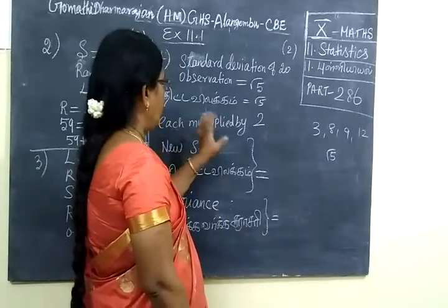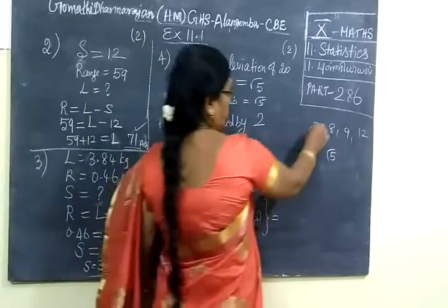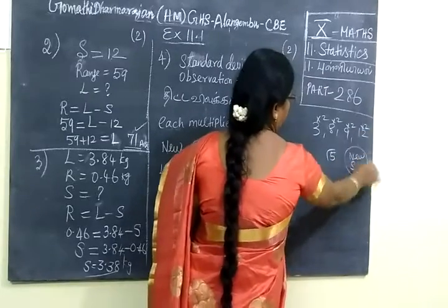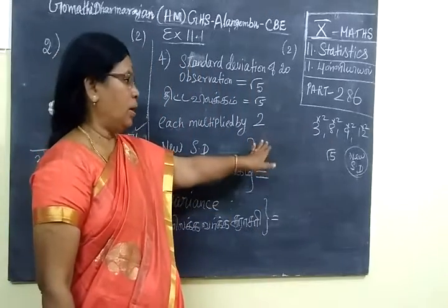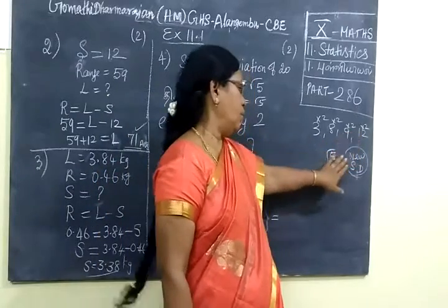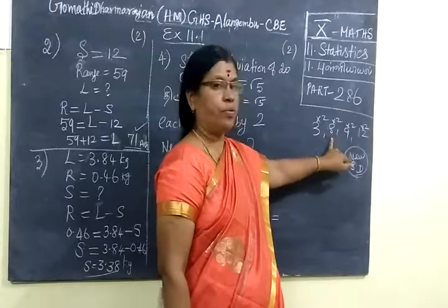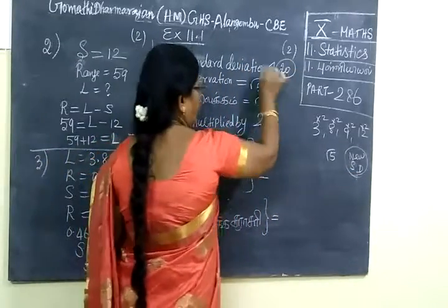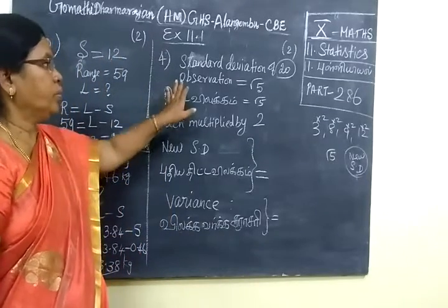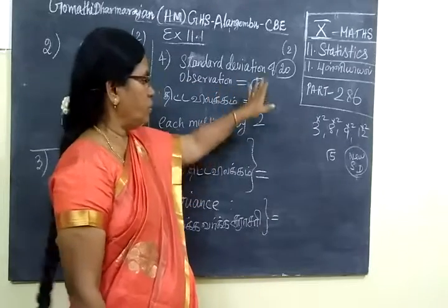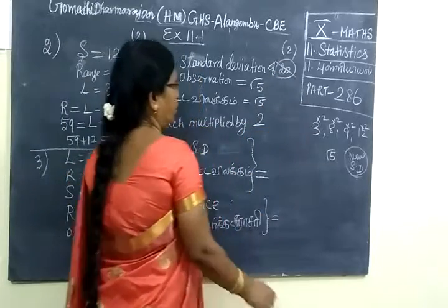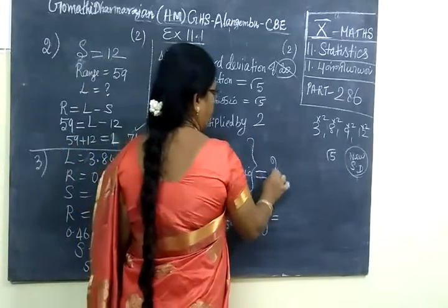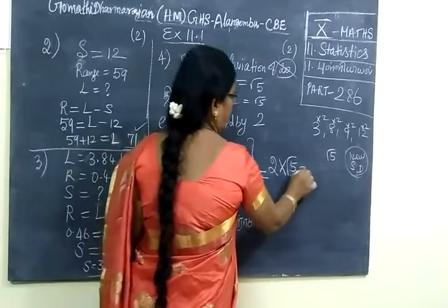Each value is multiplied by 2. Each observation is multiplied by 2. The overall value is 2 multiplied by 2. You are given some data. The question is: the standard deviation of 20 observations is root 5. Each observation is multiplied by 2. Then the new standard deviation equals 2 into the standard deviation, equal to 2 root 5.